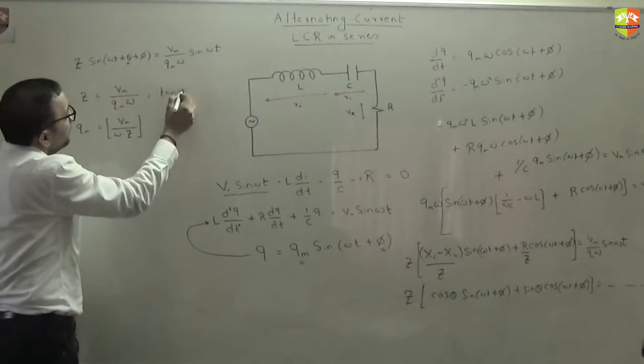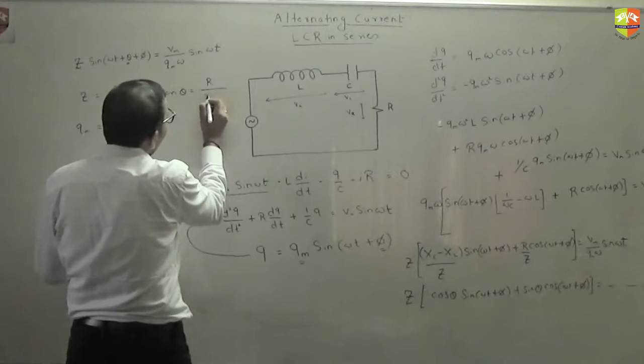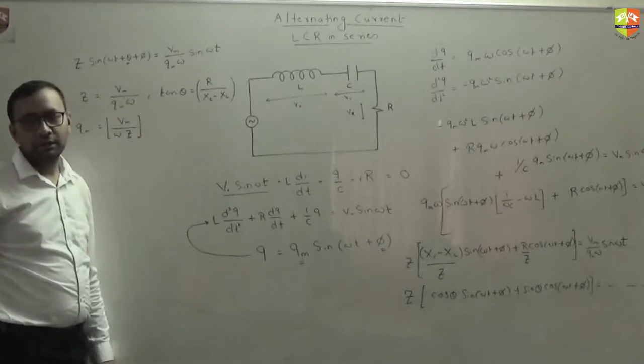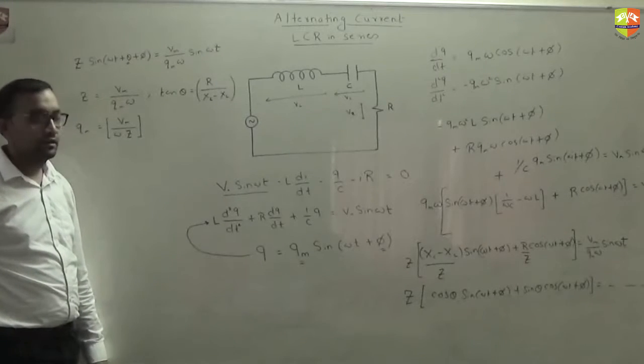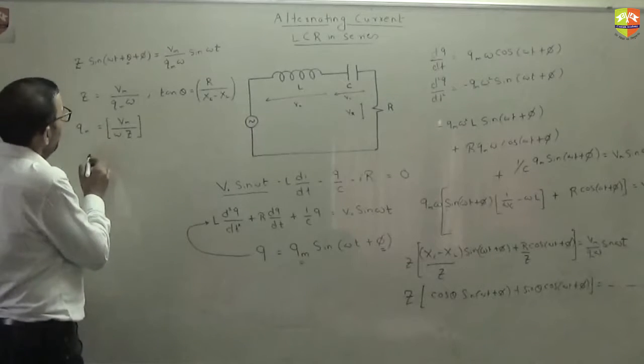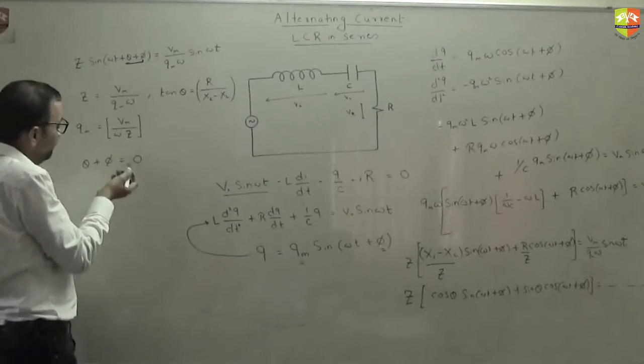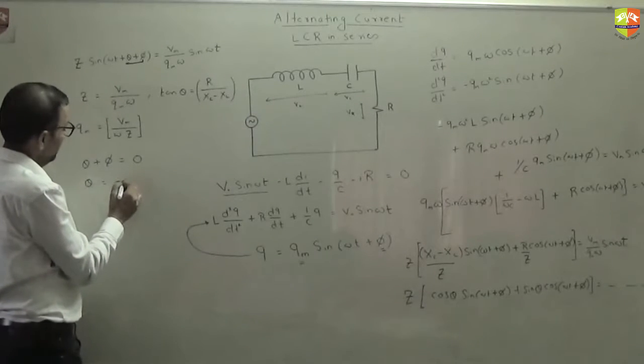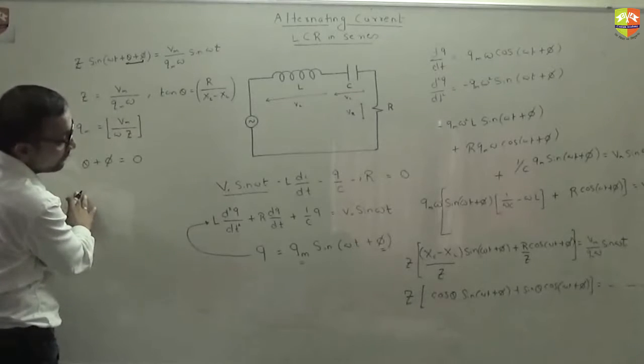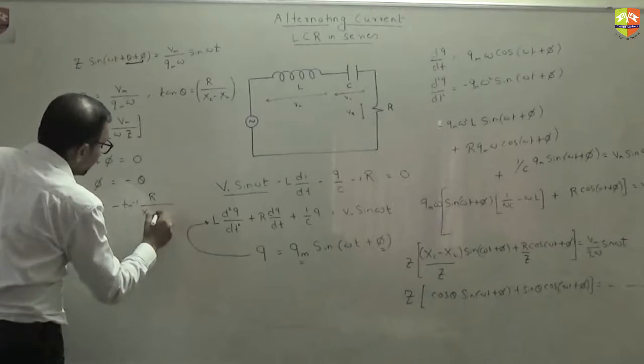So you are comparing these two. And what is theta? Theta is such that tan theta is equal to... You assume that to be sine theta, this to be cos theta. Tan theta will be equal to R divided by X_C minus X_L. So theta plus phi should become 0 or 2π or 4π, whatever it is. Best thing is to take 0. So theta will be equal to minus phi. So our solution was phi. Phi is equal to minus theta. So phi will be equal to minus tan inverse R divided by X_C minus X_L.